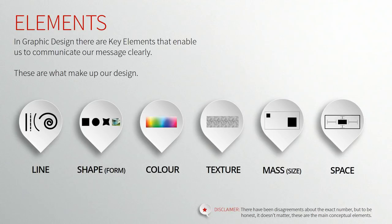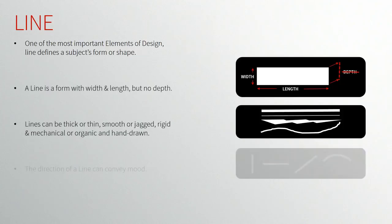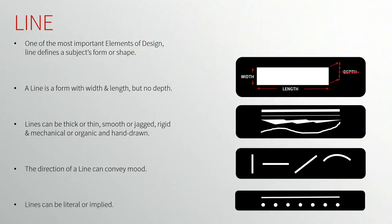There have been some disagreements about the exact number of elements, but these are the main conceptual ones we need to worry about for now. Starting with line — we all know what a line is, but we need to understand what they represent and the mood associated with a particular type of line. Lines can be thicker or thin, smooth or jagged, and can go in every direction. An important point: lines can be either literal or implied — it doesn't need to be a solid line.